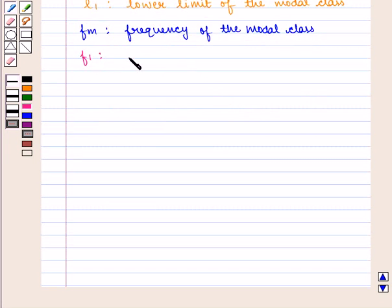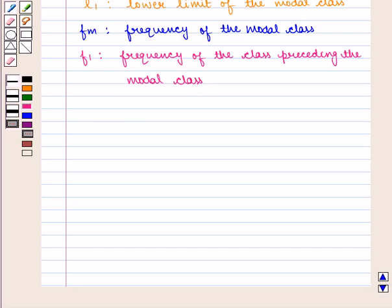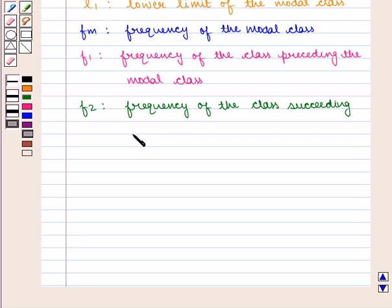F1 is the frequency of the class preceding the modal class. F2 is the frequency of the class succeeding the modal class, and I is the width of the modal class.